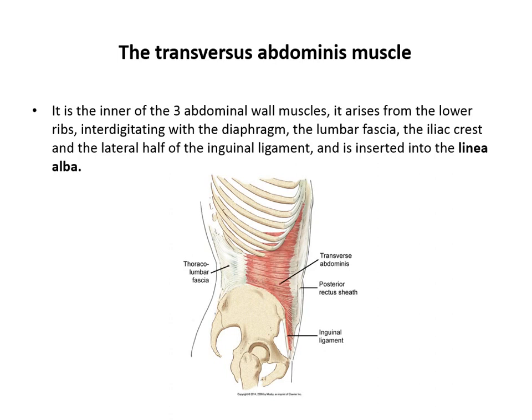The deepest one is the transverse abdominus muscle, the innermost of the three abdominal wall muscles. It arises from the lower ribs — interdigitating with the diaphragm — the lumbar fascia, the iliac crest, and the lateral half of the inguinal ligament, and is inserted into the linea alba.